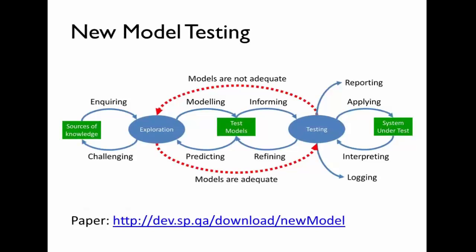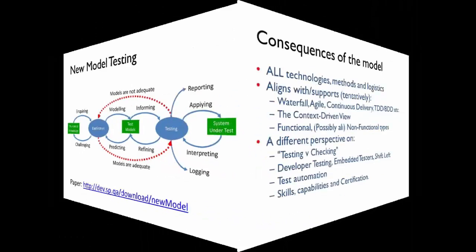So I've given you the whistlestop tour of the thinking behind this. Essentially what I'm trying to suggest is these words: inquiring, modeling, informing, reporting, applying, interpreting, logging, refining, predicting, challenging — these are the activities we do, either in our heads or in collaboration with other people. No mention of logistics. If you're interested in reading the background, there's a paper at dev.sb.qa/download — about 30 pages, quite substantial.